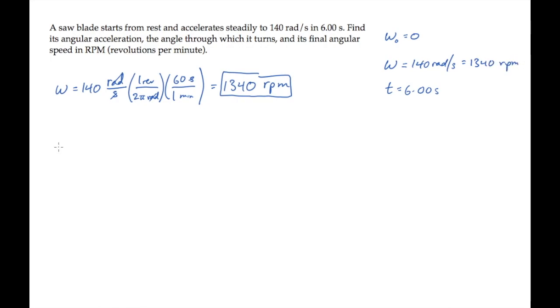Now we can use the first angular kinematic equation to solve for alpha, the angular acceleration. Substitute the known values and calculate to see that it equals 23.3 radians per second squared.